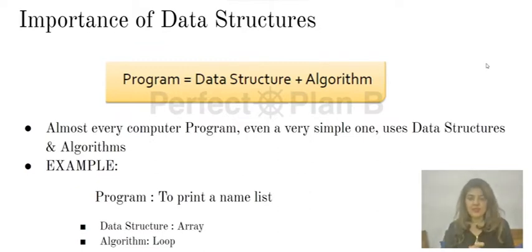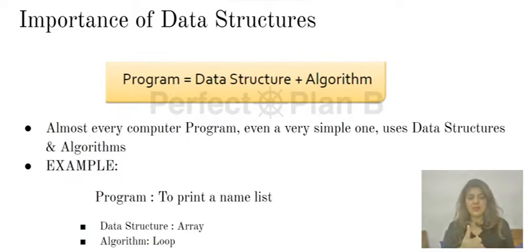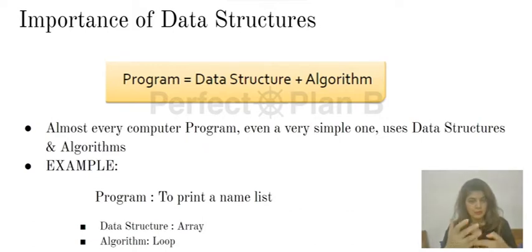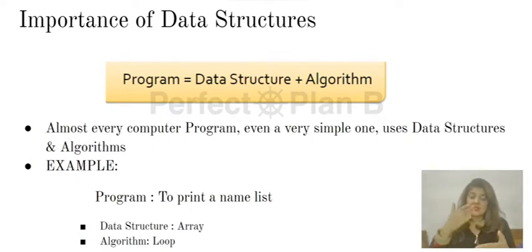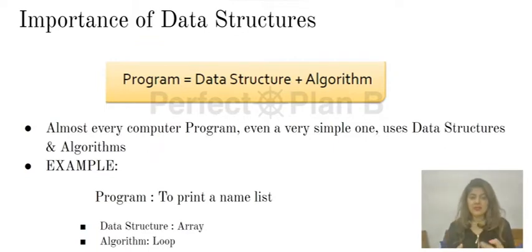Why is it important? Because almost every computer program I talk about, even a very simple one, requires data structures and algorithms. For example, if you want to print a name list, that also requires a loop — the algorithm to print that continuously. And that data has to be stored in some data structure, which is maybe an array. So even such a simple program to print a name list requires data structures.